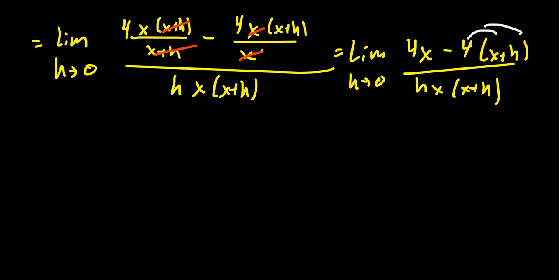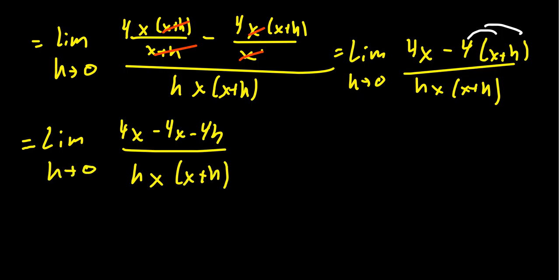Distribute that negative 4. Make sure the negative sign is carried with you there. You're going to get 4x minus 4x minus 4h over h times x times x plus h as h goes to 0. You're going to notice that the 4x will now cancel out. You're left with just a negative 4h in the numerator.